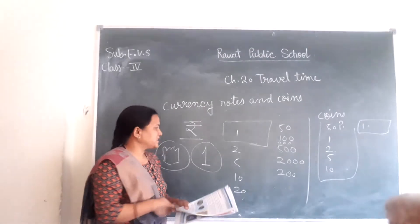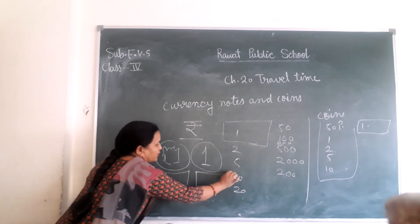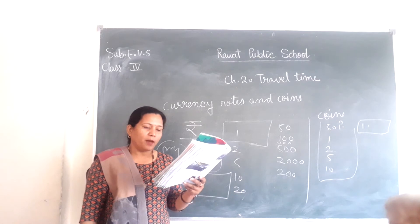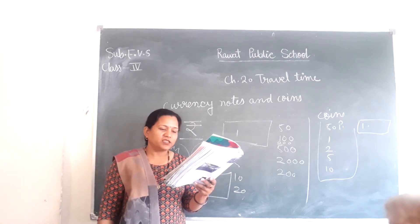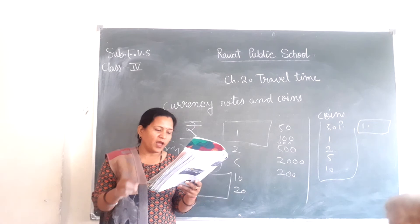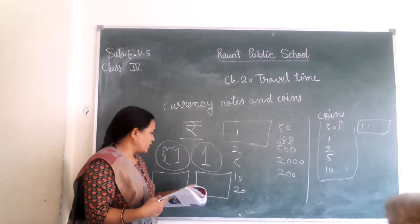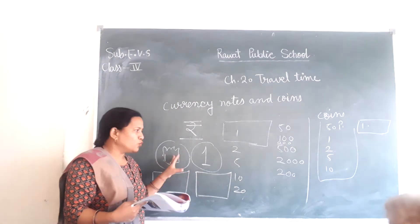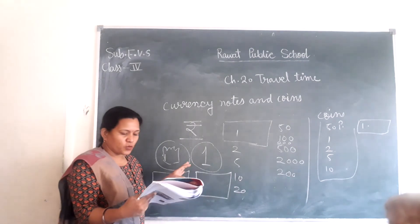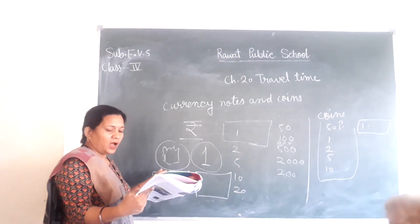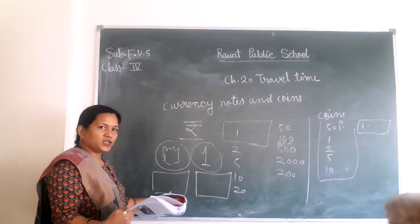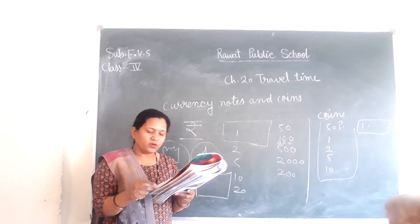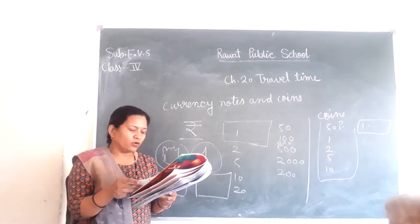On the currency note, there are two sides. On the currency note we have: the national emblem, a picture of Mahatma Gandhi, and the value of the currency note, the signature of the Governor of the Reserve Bank of India, and the watermark. The watermark is a special sign which helps us to differentiate between a real note and a fake note.